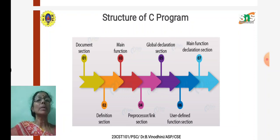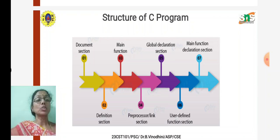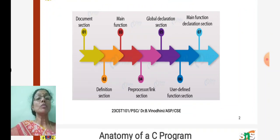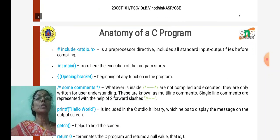Following that, if you are using any sub-program or function in your program, that is defined after the main function. This is the structure of a C program. Now we will see what is the anatomy of a C program.